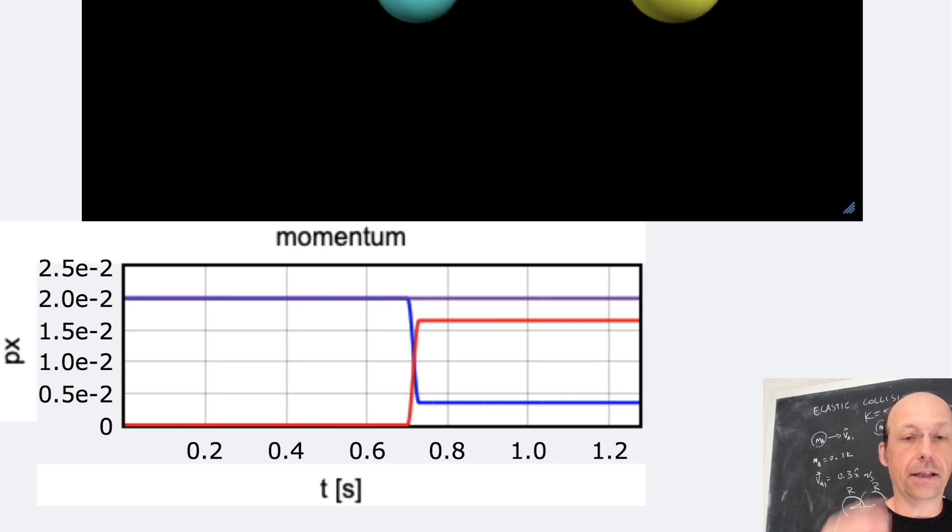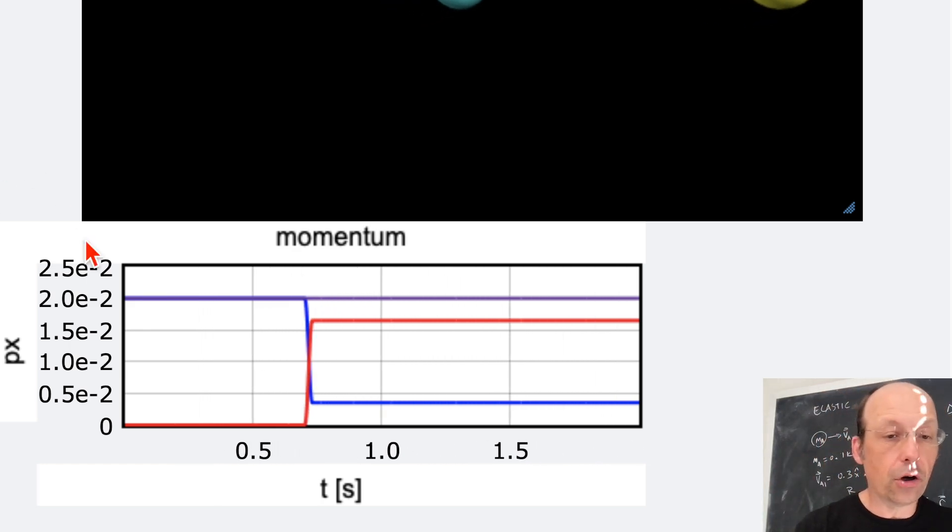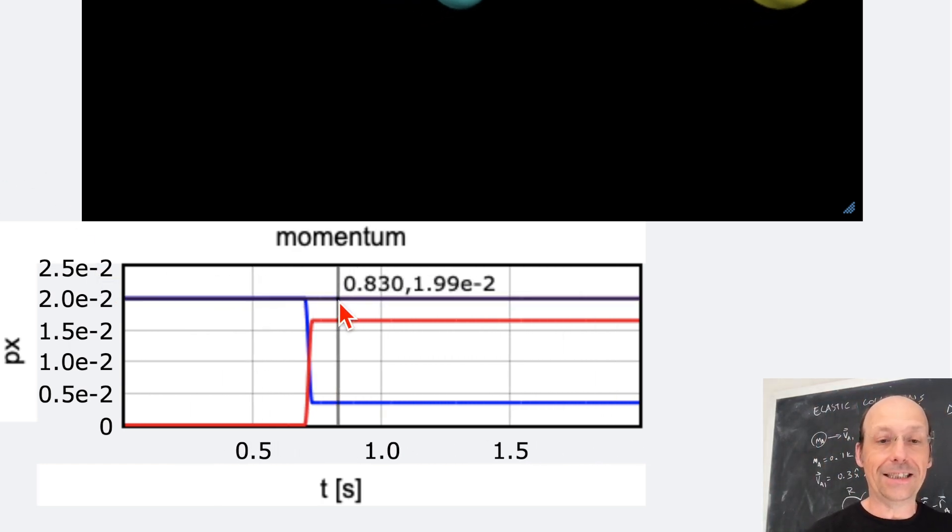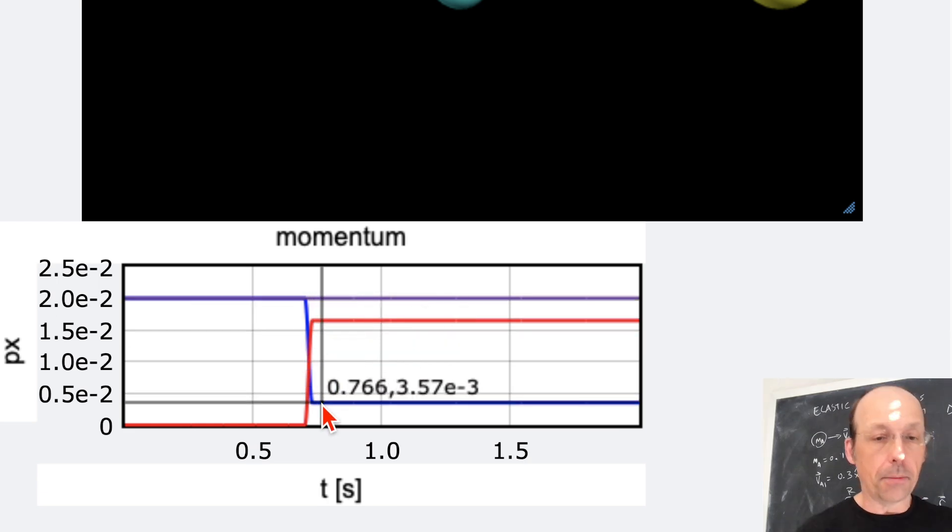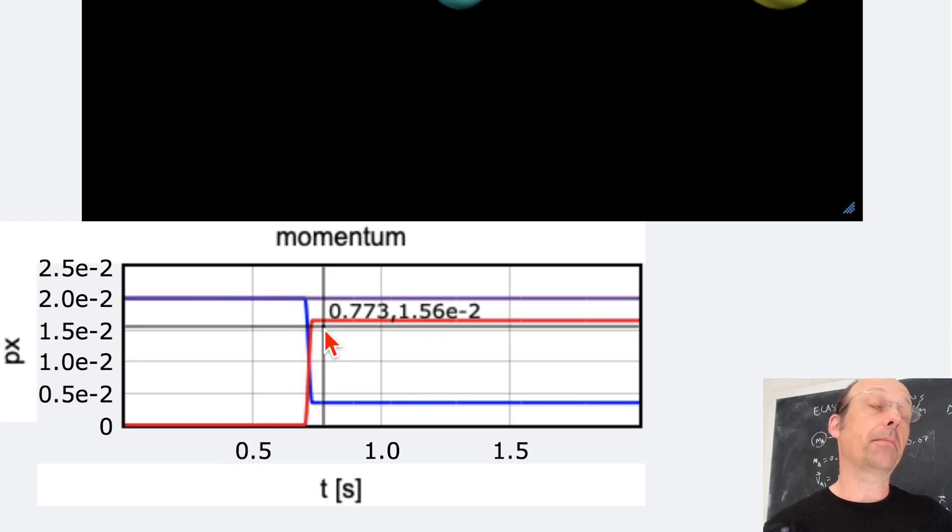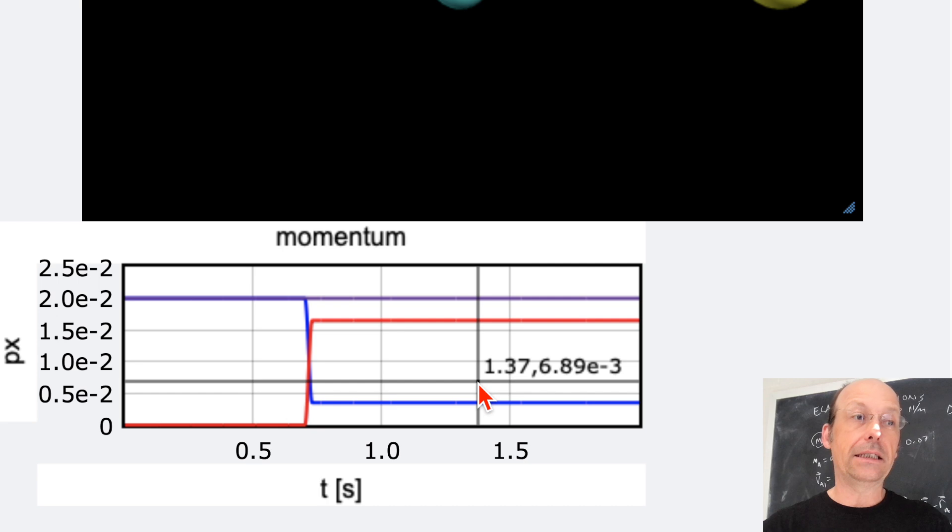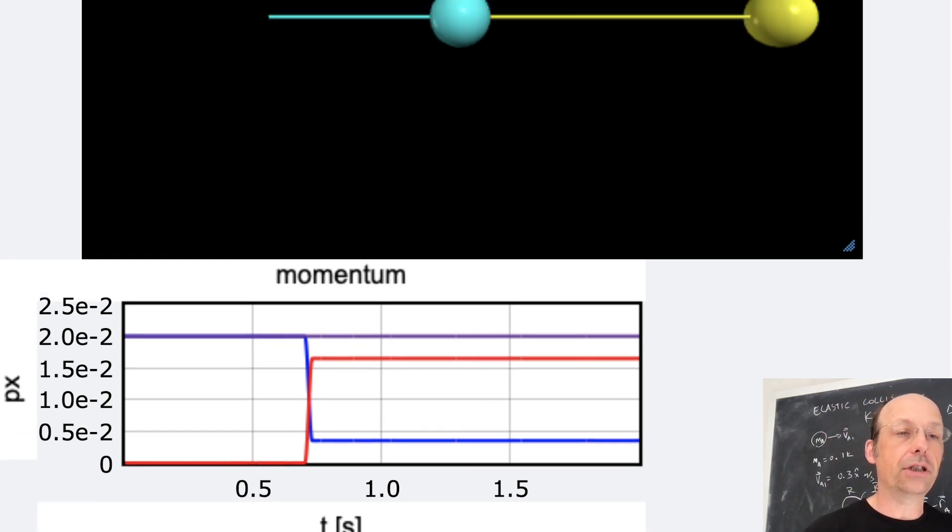Okay, there's that. Look at that. So here's the total momentum before that purple line. It stays constant. When they collide, the blue one decreases in momentum. The red increases momentum by the same amount. And the sum is the same. That's beautiful. Let's just plot the kinetic energy just to make sure.